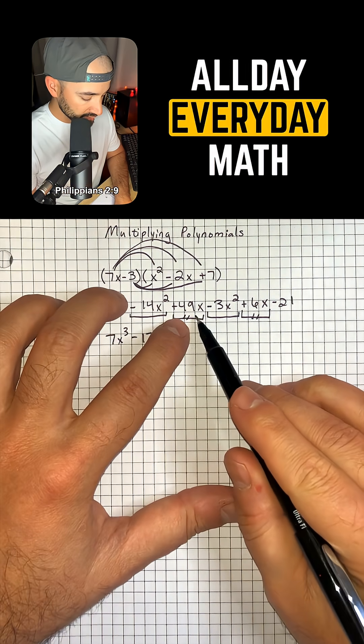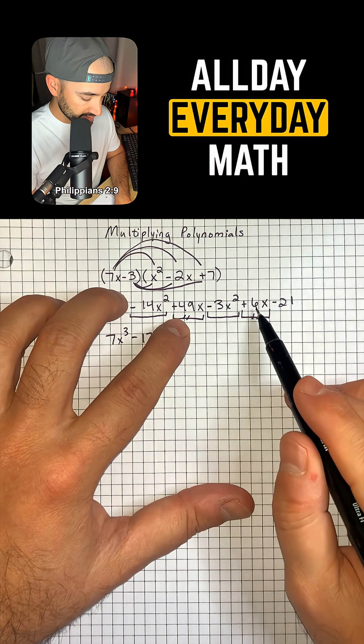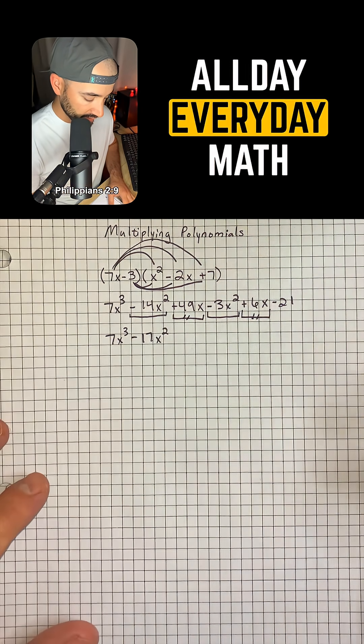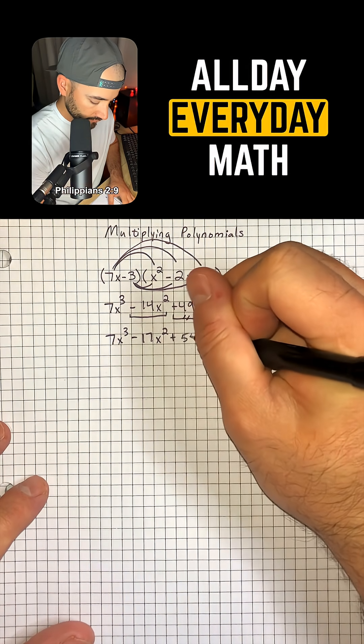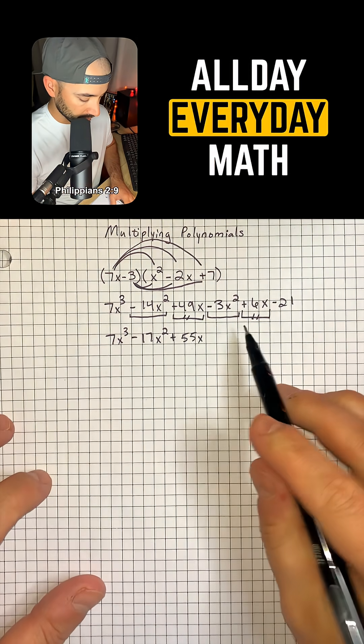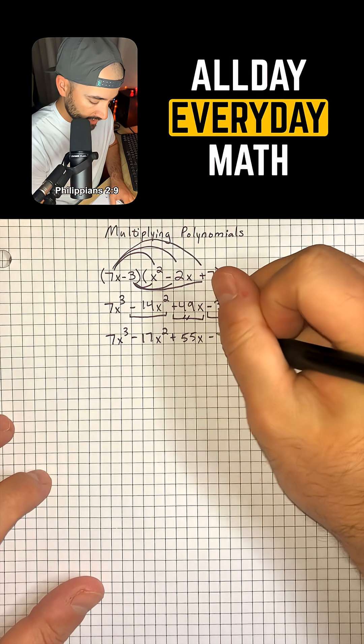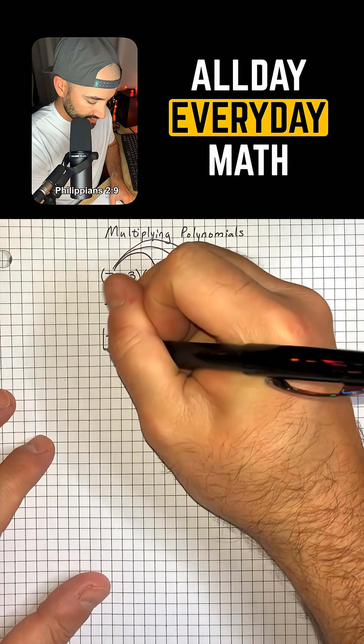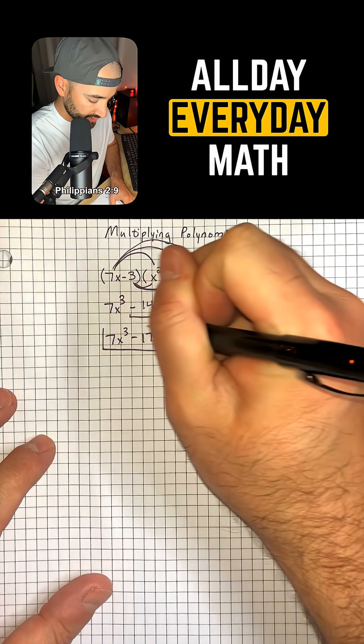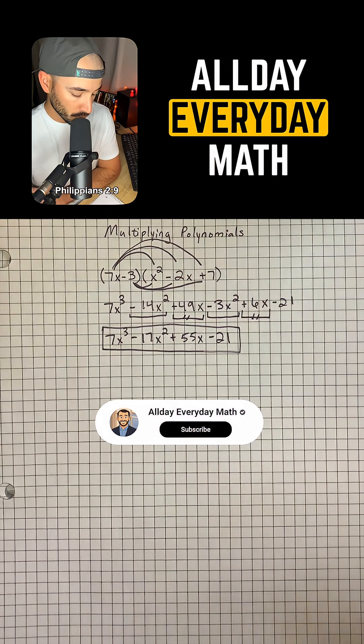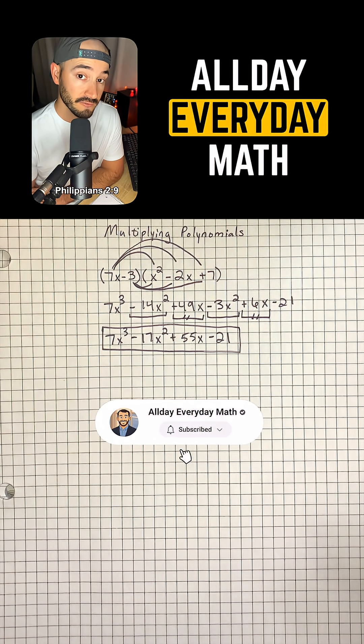Positive 49x plus 6x is going to give us plus 55x. Then we just have minus 21. And so that's as far as we can take this problem. That's how you multiply polynomials and then simplify the expression.